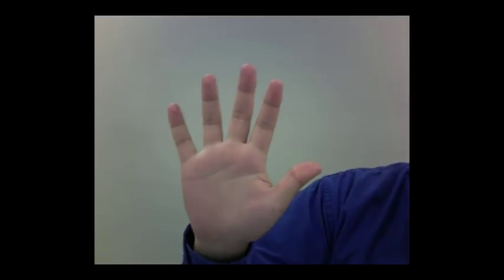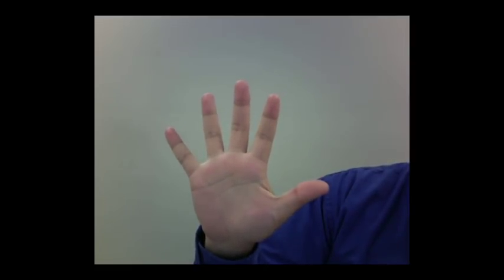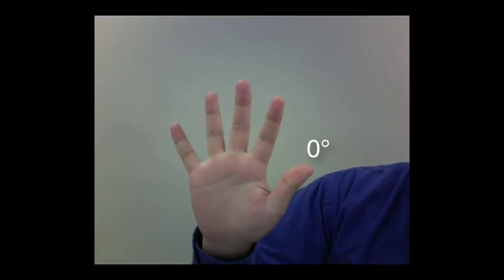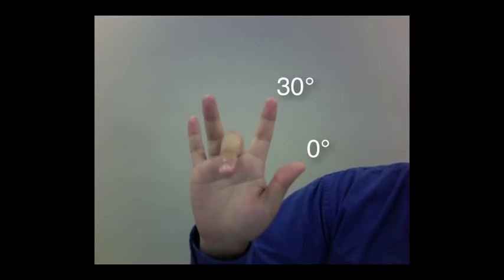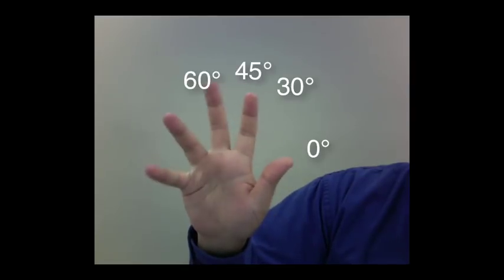To use this trick we're going to start with our hand. Everything happens on one hand. First thing we do is look at our fingers. We label each one with a basic angle. The thumb is 0 degrees, 30 degrees, 45, 60, and 90 degrees.